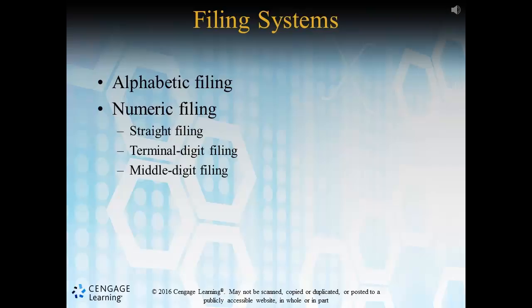Alphabetic filing systems utilize a patient's first name, initial, and last name to file records away. Numeric filing systems can be broken into three subcategories: straight filing, terminal-digit filing, and middle-digit filing.